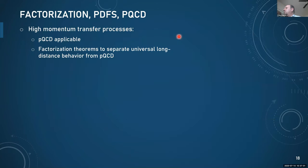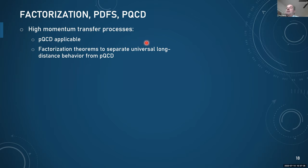With that out of the way, let's focus on the hard process domain. There are two important aspects that make this tractable. First, momentum transfers are large, so the strong coupling becomes weak and we can apply perturbative QCD. However, there's always long-distance behavior in QCD which you can never escape — in Feynman diagram integrals, there's always an infrared limit to worry about, and soft gluons could be around.